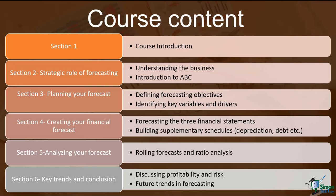This is how the course is structured. From sections 1 to 3, we will be discussing the theory behind financial forecasting, which includes how to understand the business, and we will discuss a fictional company called ABC used as an example throughout this course. We will also discuss the forecasting objectives and key variables and drivers. In sections 4 and 5, we shift gears and delve into the forecasting calculations. In section 6, we round off the course by discussing profitability, risk, and key trends in financial forecasting.